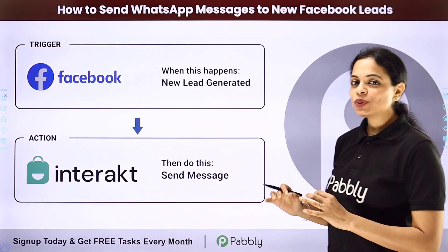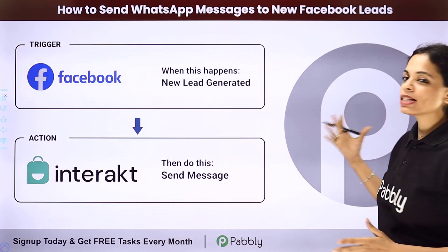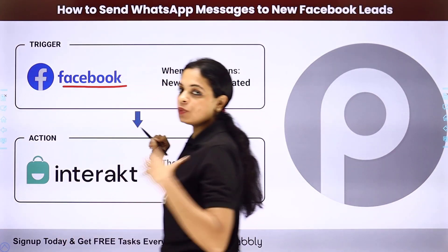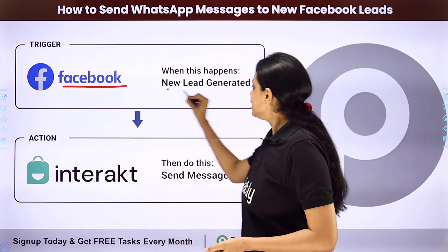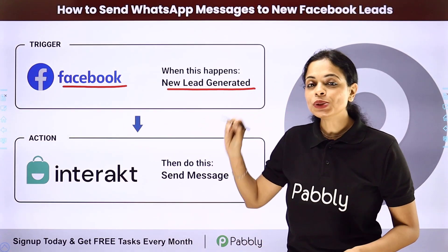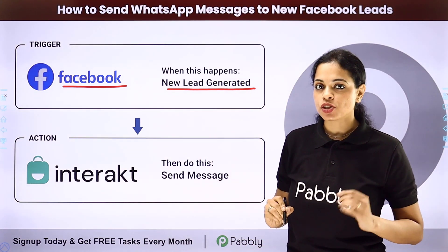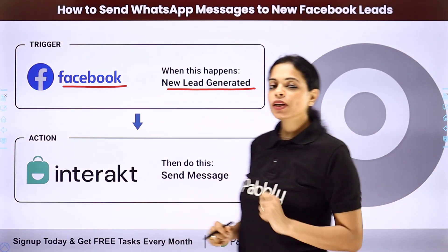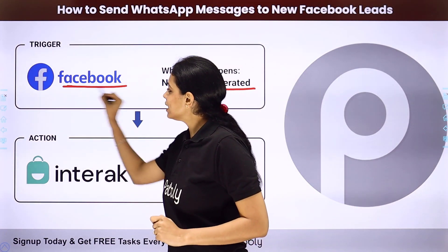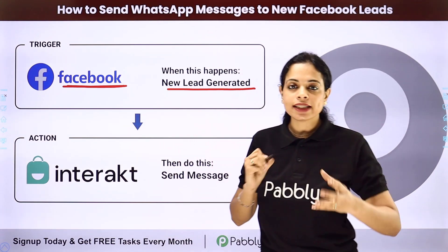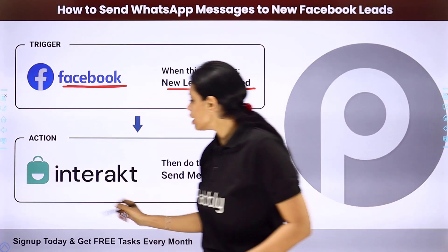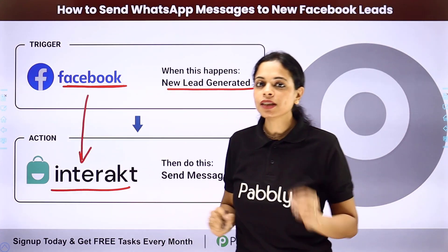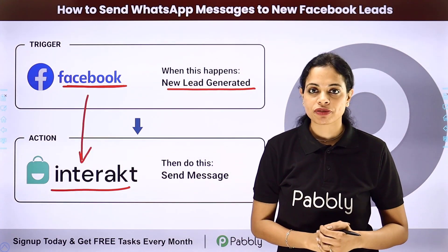In this video we are going to see how to send WhatsApp messages to new Facebook leads. You are using Facebook lead ads to generate leads, and every time a new lead is generated you want to send your lead a WhatsApp message talking about your company, the brochure, the product, etc. For this you will have to integrate with an application that can help you send WhatsApp messages. Here we are using Interact, and the integration can be done using Pabbly Connect software.